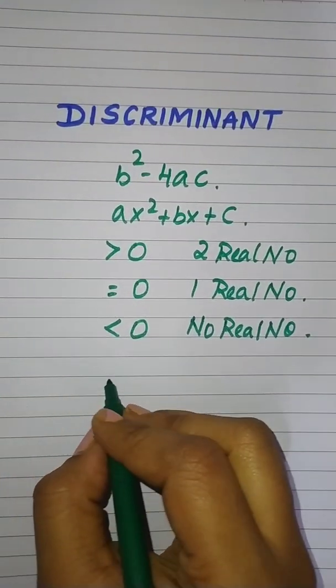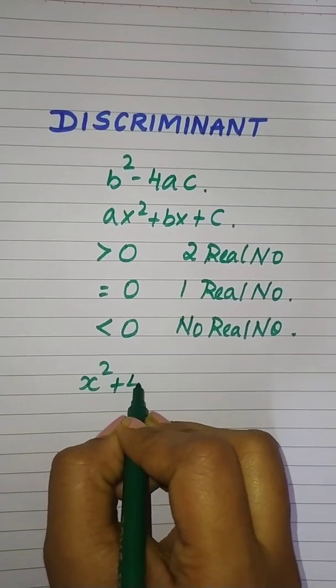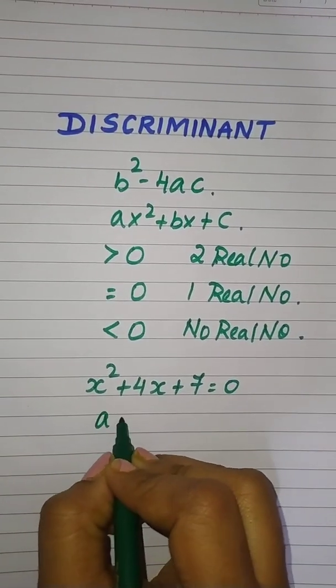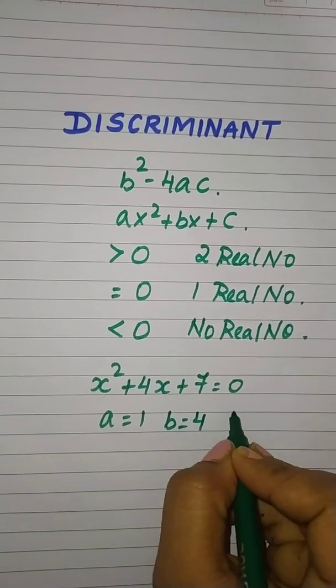Now let's see an example. I have an equation x squared plus 4x plus 7 equals 0. Here a is 1, b is 4, and c is 7, right?